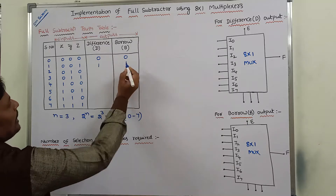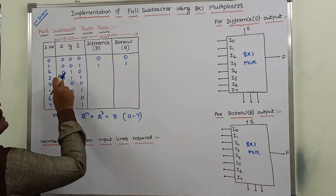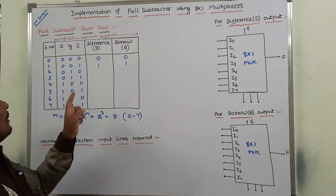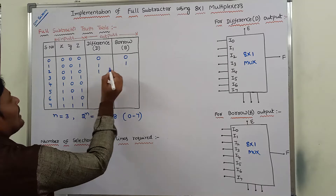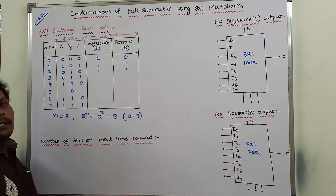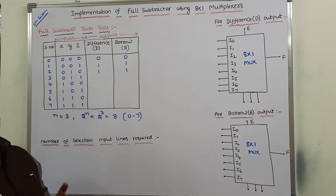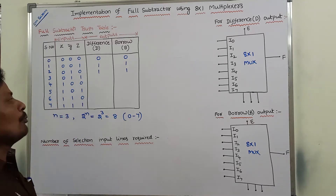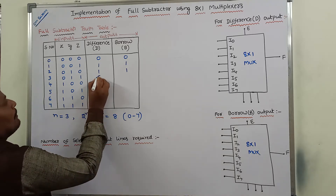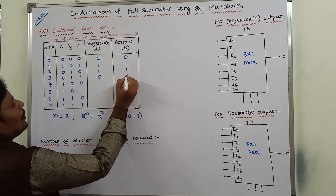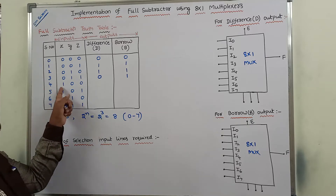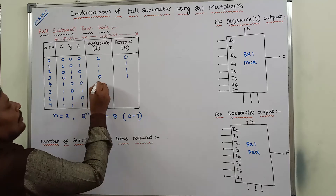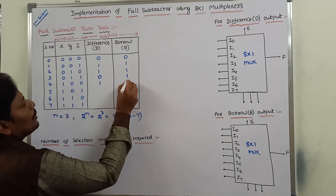Now we find difference and borrow. For 0 minus 0, difference is 0 and borrow is 0. For 0 minus 1, that is 1 with borrow 1. Next, 0 minus 1, that is 1 with borrow 1, minus 1, so difference is 0 and borrow is 1. Next, 1 minus 0 that is 1, 1 minus 0 that is 1, borrow 0.